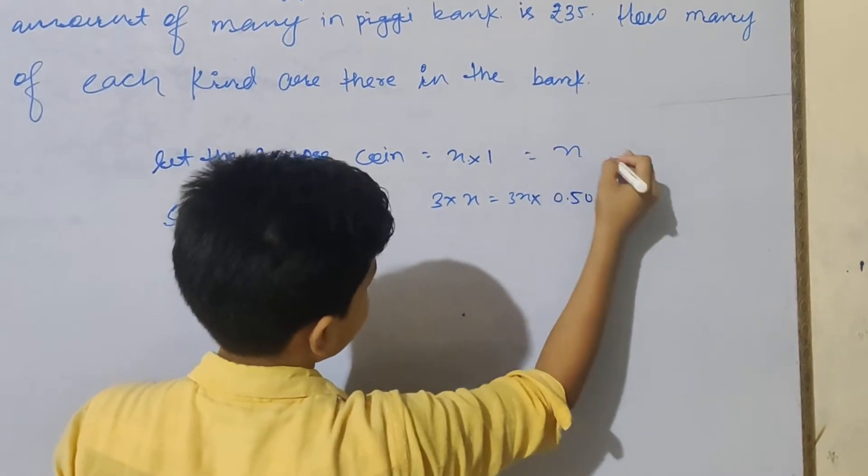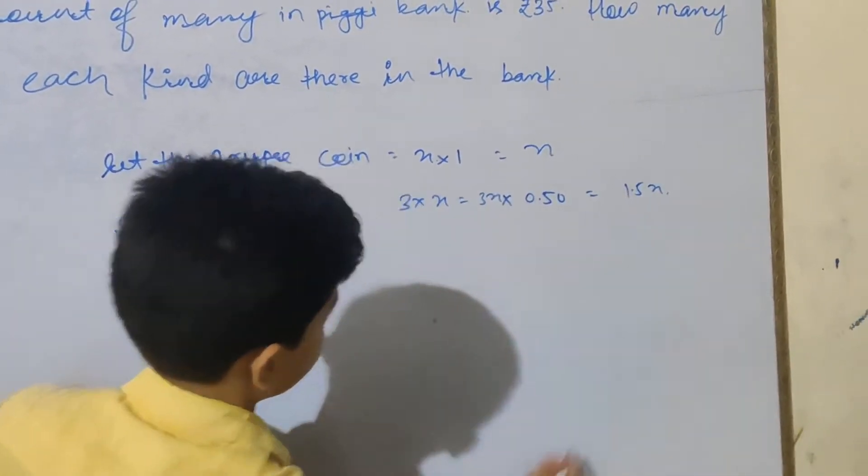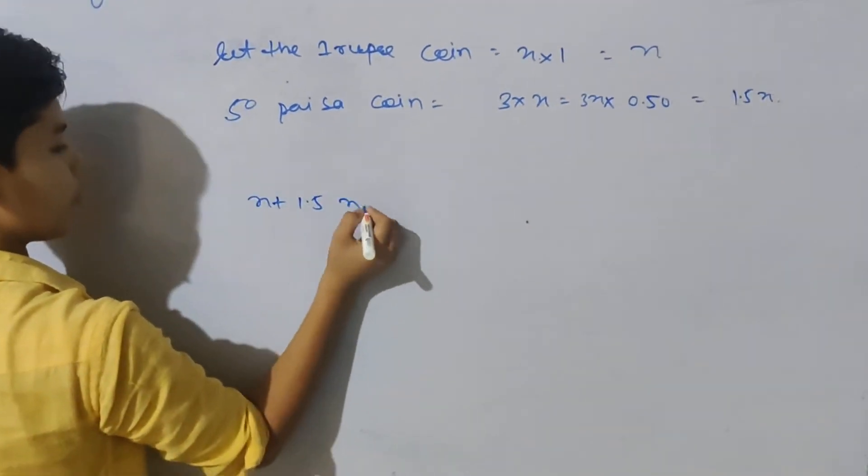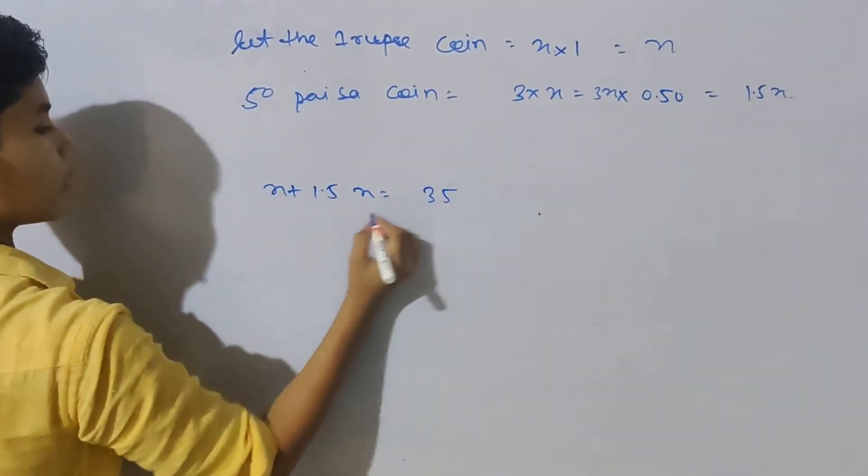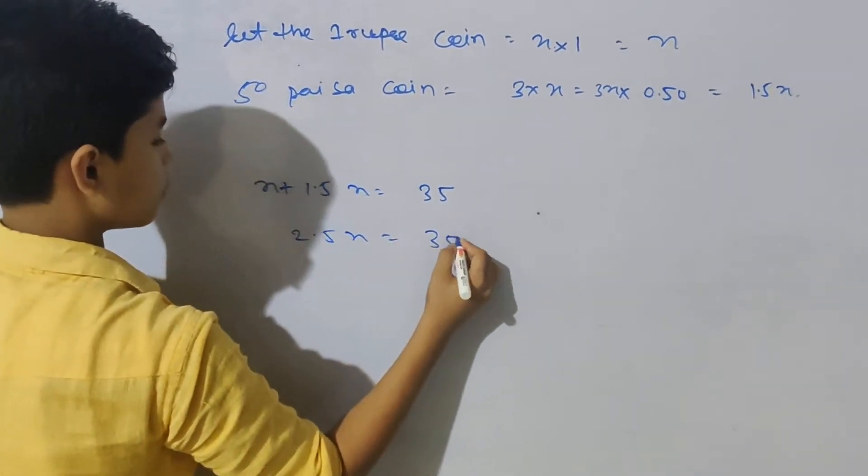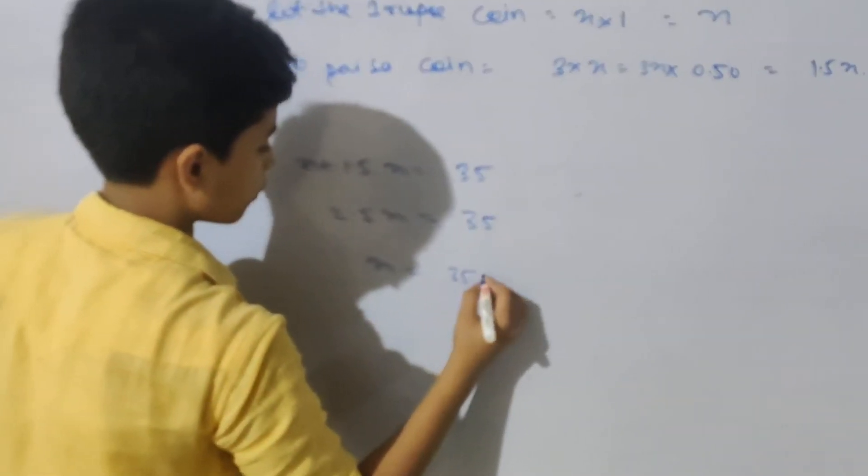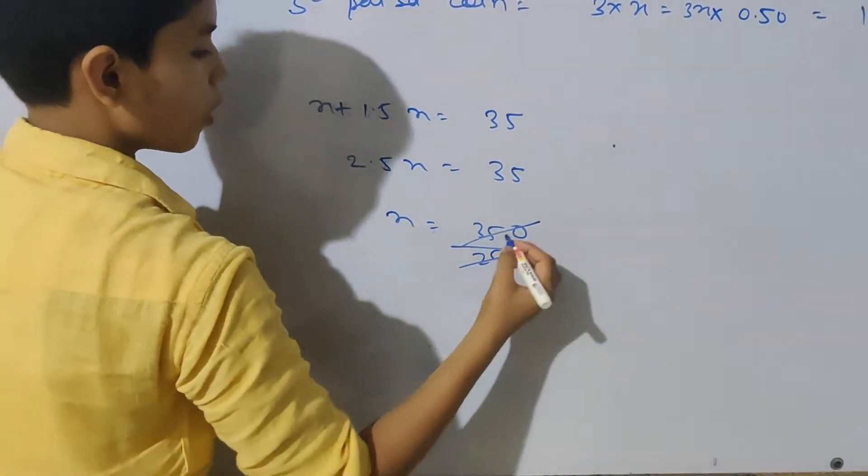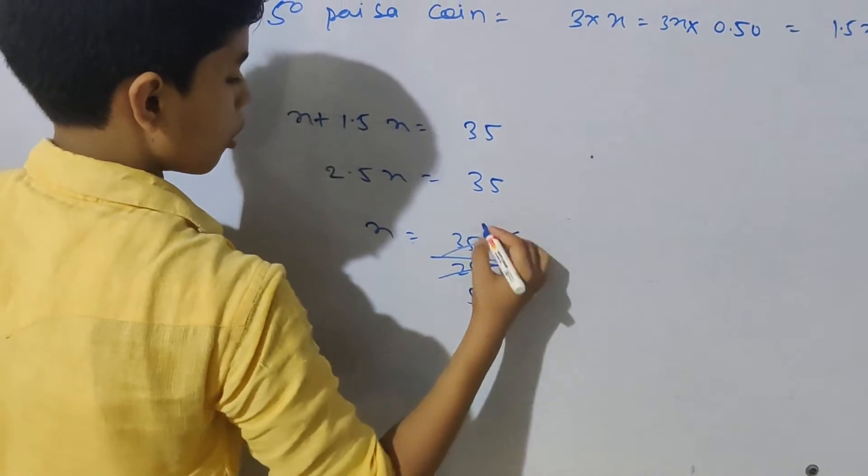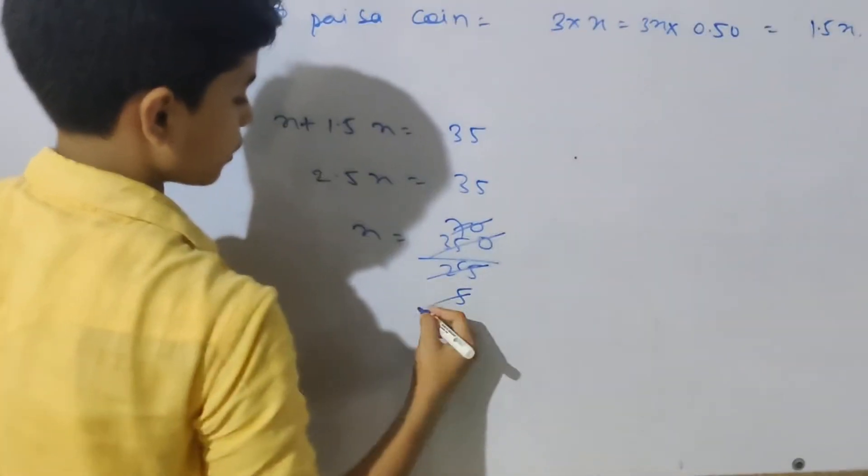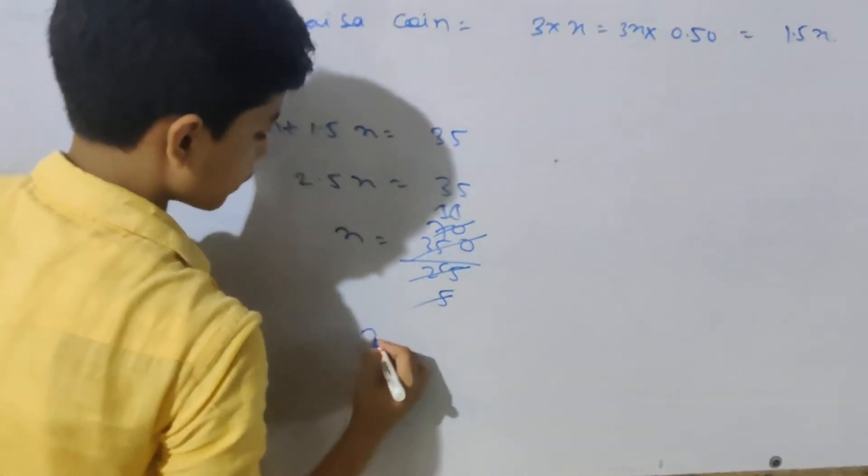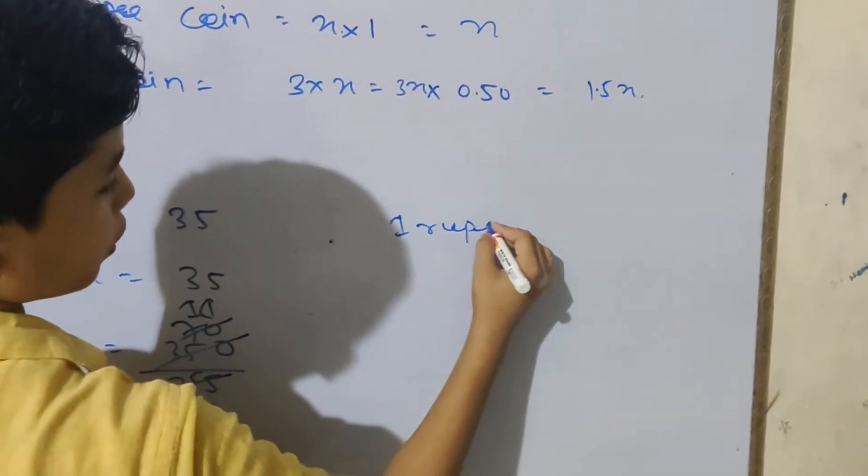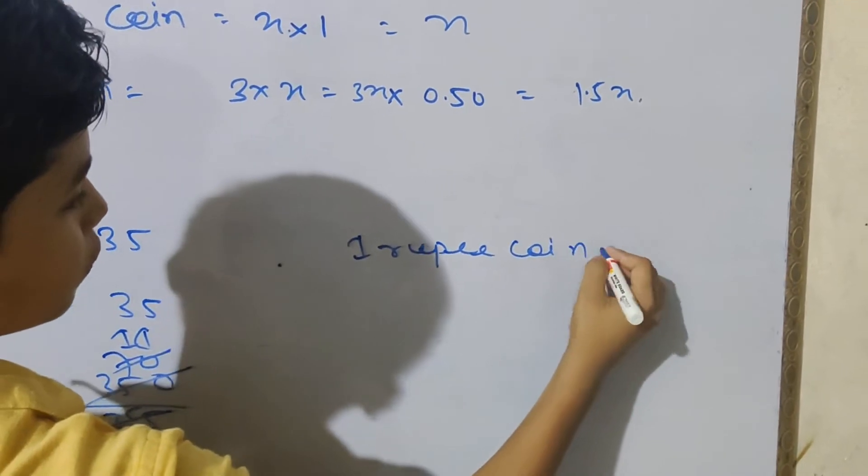So x plus 1.5x is equal to 35. So 2.5x is equal to 35, and x is equal to 35 upon 2.5, which equals 14.